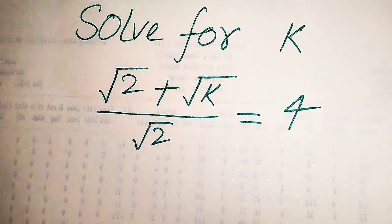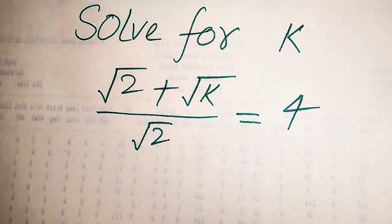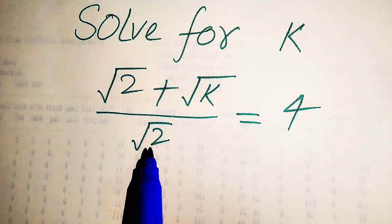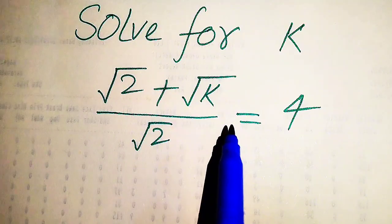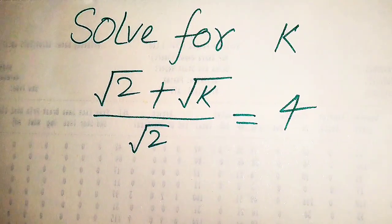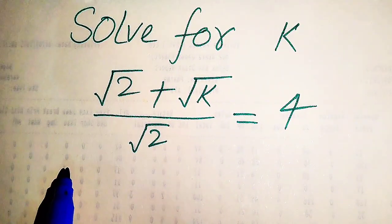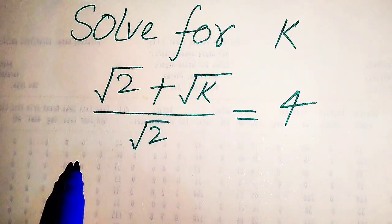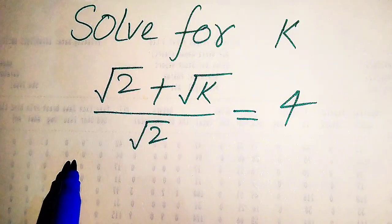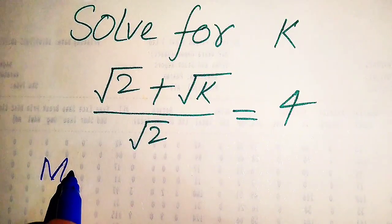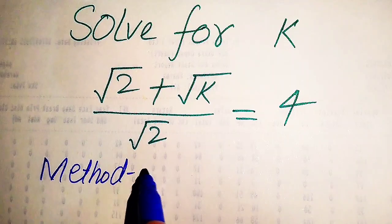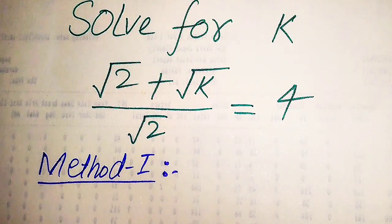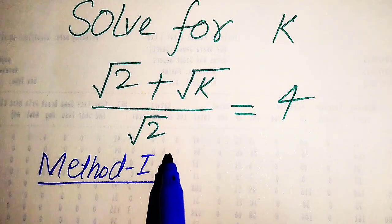Hello everyone. How to solve this problem: for the values of k, if we have square root of 2 plus square root of k, divided by square root of 2, equals 4, and we solve this problem for all the values of k. First we need to find all the roots of this equation, and at the end we will verify which of the roots are solutions and which are extraneous roots. We will solve this problem using two methods.